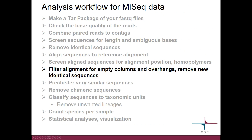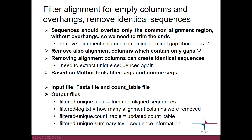We still need to work on the alignment a little bit. We need to filter it for empty columns and overhangs, and we also want to remove newly identical sequences. The sequences should now overlap the same common region in the alignment without overhangs, so we need to trim the ends — removing alignment columns which contain terminal gap characters or dots, and also removing alignment columns which contain only gaps and dashes. Doing this can recreate identical sequences, so we need to extract unique sequences again.